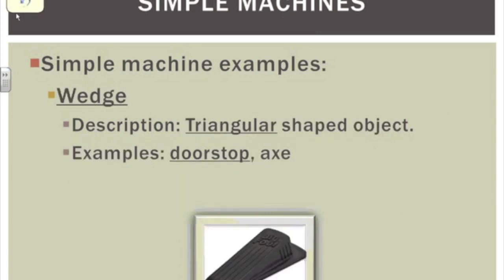A wedge is a doorstop — simply a triangular-shaped object you can stick in a door to hold it open. It makes the job easier — you don't have to stand there and hold the door open yourself. A wedge could also be something like an axe used to split wood.